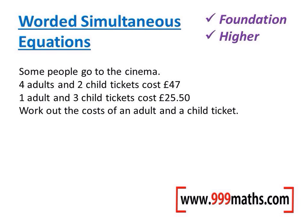These sorts of questions are very common, and especially now simultaneous equations appear on foundation and higher exams — they're a good way of differentiating between students. For example: four adults and two children go to the cinema costing 47 pounds. I'm going to set that up as algebra, so I'll write down the first equation.